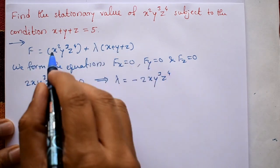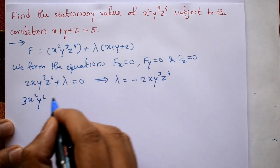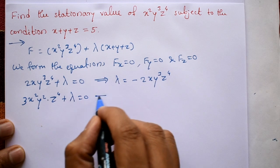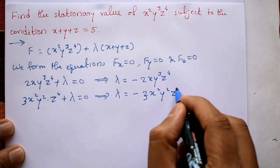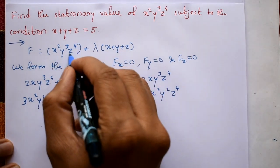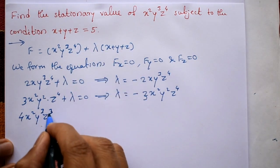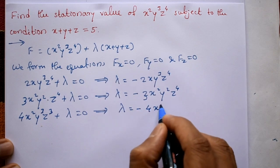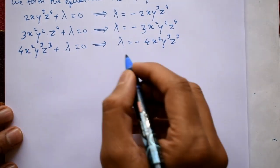For ∂F/∂y = 0: differentiating with respect to y partially, x and z are constant, so x² stays, differentiate y³ to get 3y², giving x²·3y²·z⁴ plus lambda equal to 0, so lambda equals minus 3x²y²z⁴. Next, differentiating with respect to z: x and y are constant, differentiate z⁴ to get 4z³, giving x²y³·4z³ plus lambda equal to 0, so lambda equals minus 4x²y³z³.